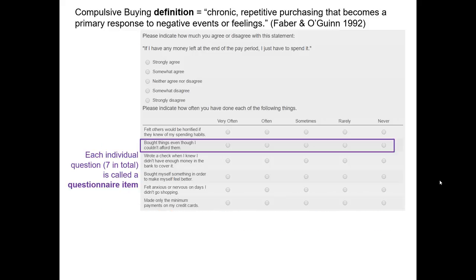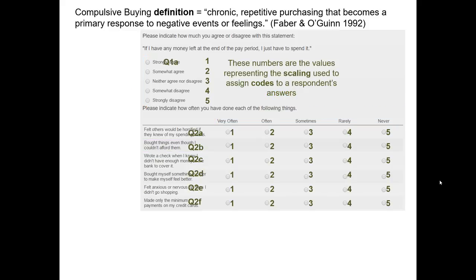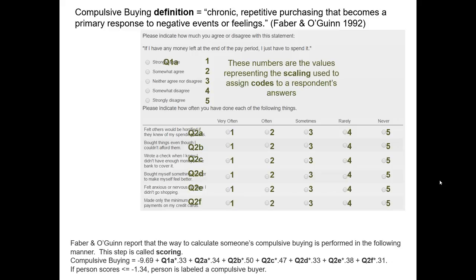There are two different types of response scales used in this particular scale. We have an agreement scale above — just one question corresponds with that response scale — whereas a subjective frequency scale is used for the remaining six items below. The scaling system was rather straightforward for this particular scale. In all cases, a one-to-five scoring methodology was used. Then Faber and O'Quinn provide the way to properly calculate someone's individual compulsive buying score.